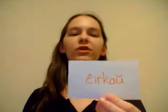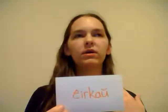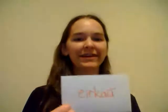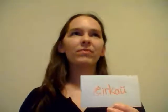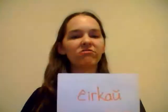ĈIRKAŬ means 'around' — not necessarily completely surrounding, but around. It can also mean surrounding. So if there is grass ĉirkaŭ mia domo, then there is grass around my house.